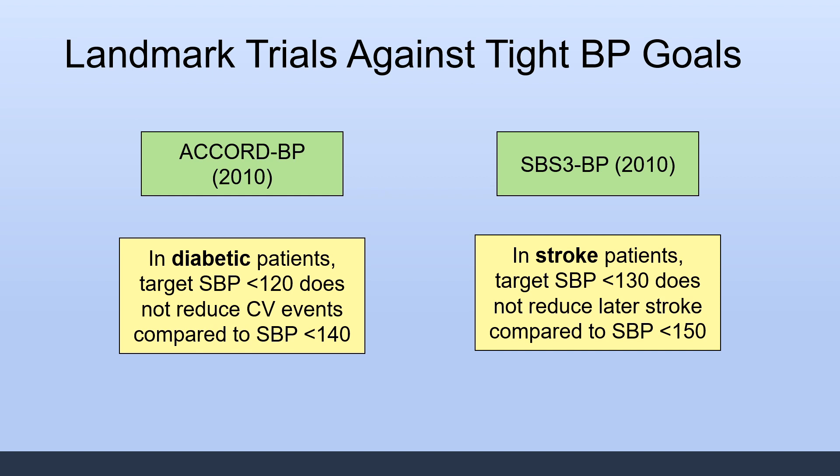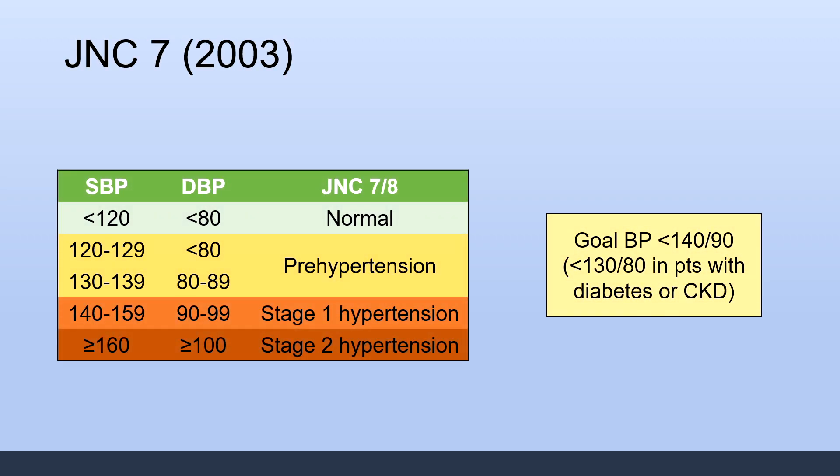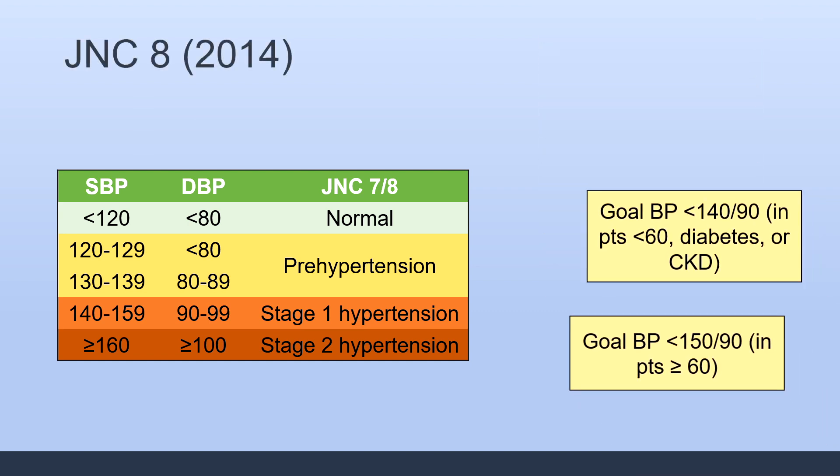In the SPS3 blood pressure trial, stroke patients were examined and found that a target blood pressure of less than 130 did not reduce the chance of a future stroke compared to a target of less than 150. With these results, the JNC-7 decided to update their guidelines in 2014 to JNC-8.